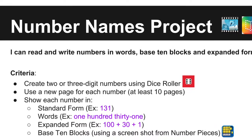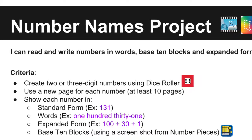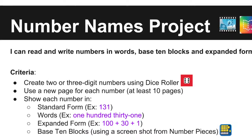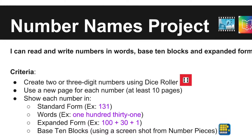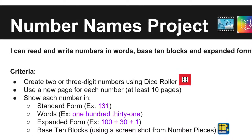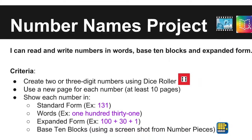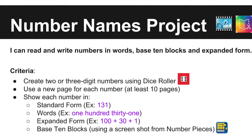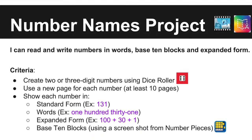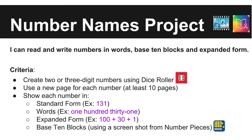The next task is a number names project. Once again, students can choose between Explain Everything and Book Creator. The learning target is: I can read and write numbers in words, base 10 blocks, and expanded form. The criteria or must for this project include creating two or three digit numbers using Dice Roller.